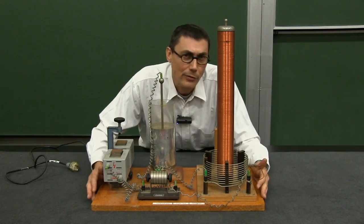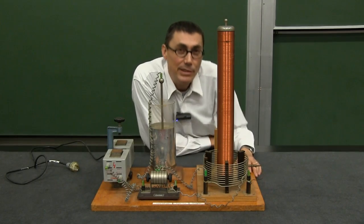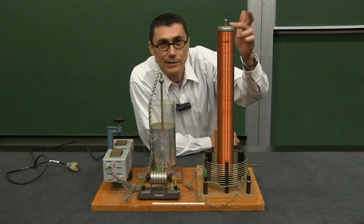This is a Tesla coil with its clothes off so you can see what the bits look like. Now the business end of the Tesla coil essentially is just a transformer.